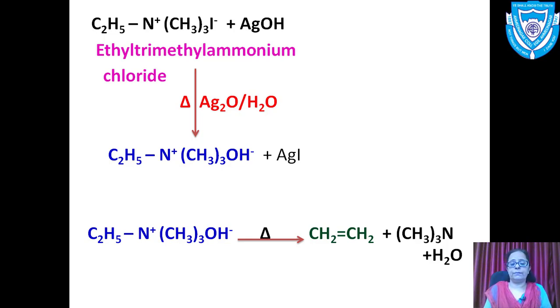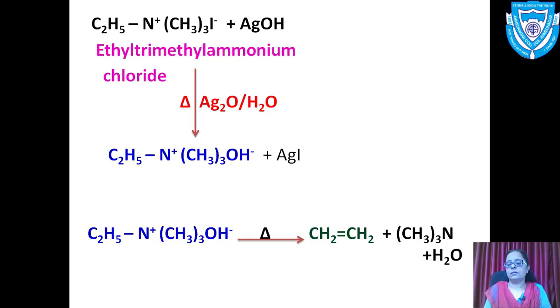In the second step, ethyl trimethyl ammonium hydroxide — the quaternary ammonium hydroxide — is heated at a higher temperature, giving an alkene and trimethylamine.